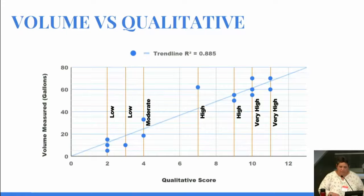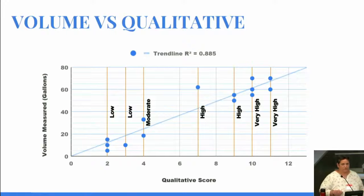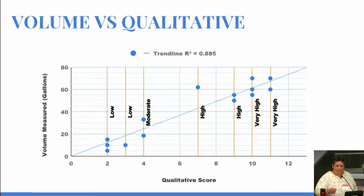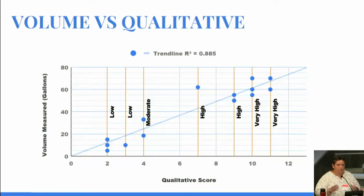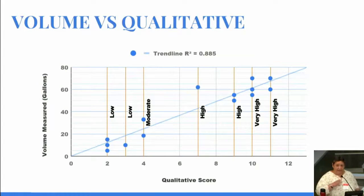We also wanted to compare each one of those methods to one another. This comparison shows volume versus the qualitative method — walking the assessment area, visualizing it, and giving it a score. Those two methods seem to match up really well. There seems to be a high correlation between what you're seeing and how much you are collecting.